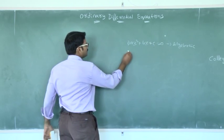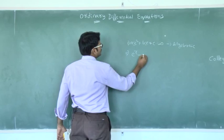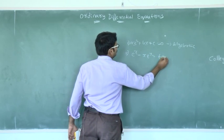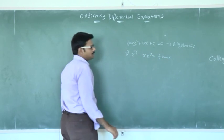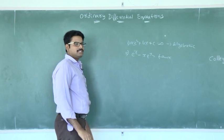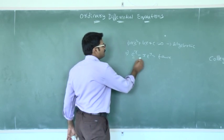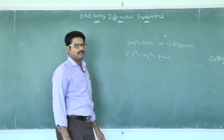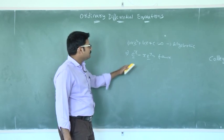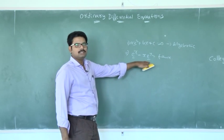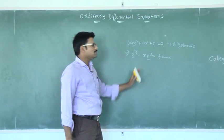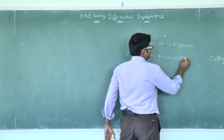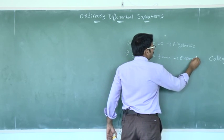If you take one more example: e^x − x·e^y = tan x, we can call it as an exponential equation. Why? Because it is having exponential terms, e^x and e^y like that. So an equation which is having exponential terms, that equation is known as an exponential equation.